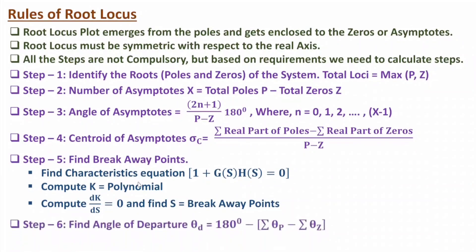In the next step we need to identify the angle of departure. Angle of departure means: for a given pole, at what angle will the line emerge. It is calculated as: 180° minus the summation of angles of poles minus the summation of angles of zeros. Using this equation we can identify the angle of departure. This step is essential when you have poles or zeros with imaginary values.